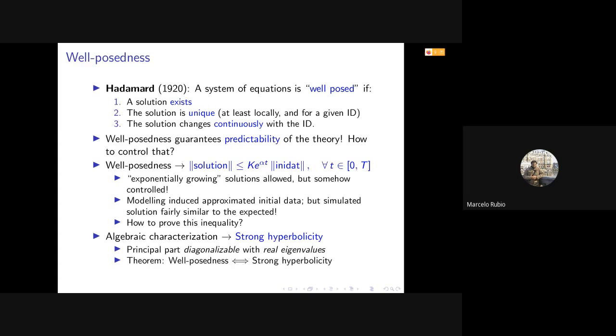So the basic idea of well-posedness is from Hadamard. A system of equations is called well-posed if a solution exists, the solution is unique at least locally in time, and it changes continuously with the initial data. So the importance of well-posedness in any system of equations aiming to describe some physics is that it guarantees the predictability of the theory. It's crucial in order to predict what's going on with the system starting from some initial condition. The idea is to control the solution in time somehow with the initial data.